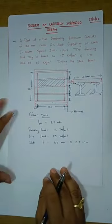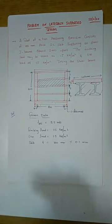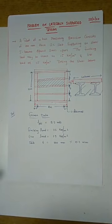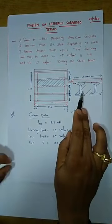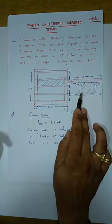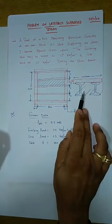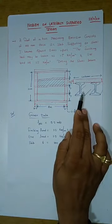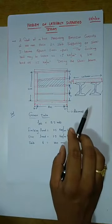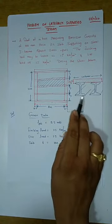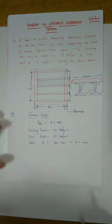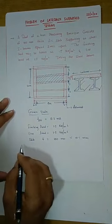Before starting the design, we must first analyze the structure — that means calculating the loads acting on the beam, then finding the maximum shear force and maximum bending moment. Based on the maximum shear force we design for shear strength, and based on the maximum bending moment we design for bending strength.